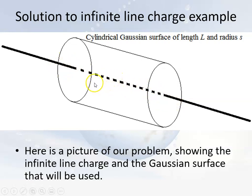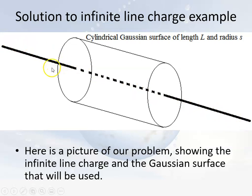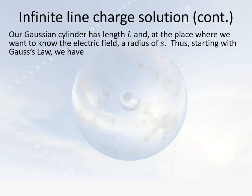In employing Gauss's Law to find the electric flux, by symmetry — because this has symmetry along the axis — the electric field must be pointed radially outward in all directions from the line charge. This means it goes through all parts of the main cylindrical surface, but not through the ends; it's tangent to the ends. So the end caps do not give us a contribution to our flux.